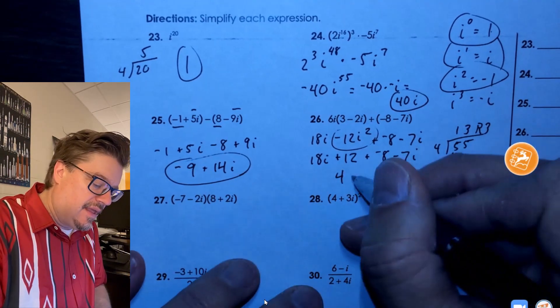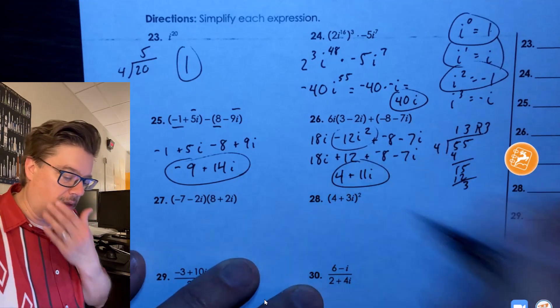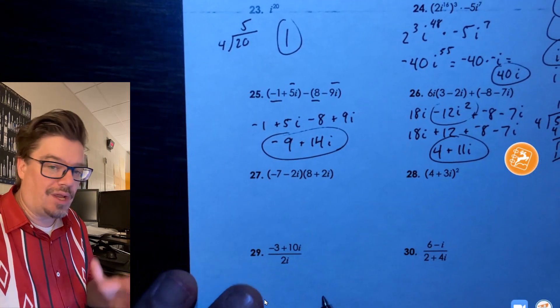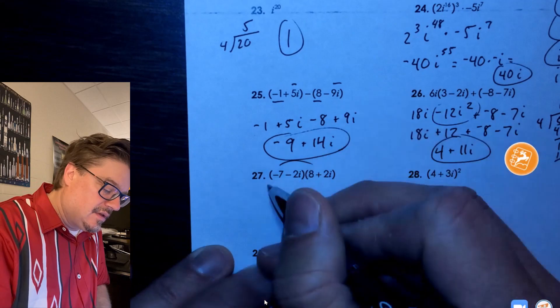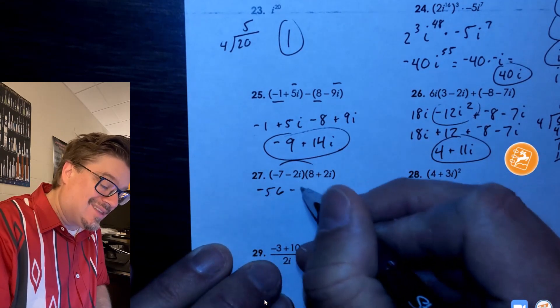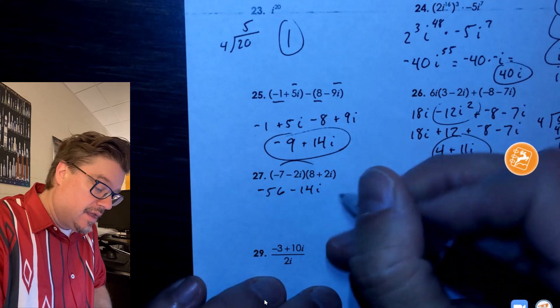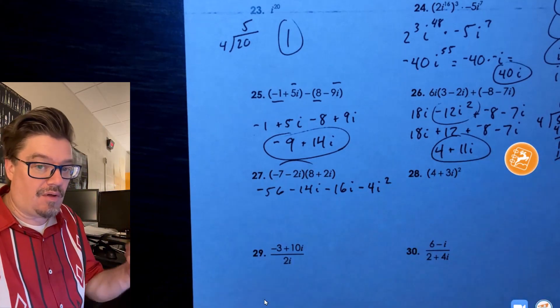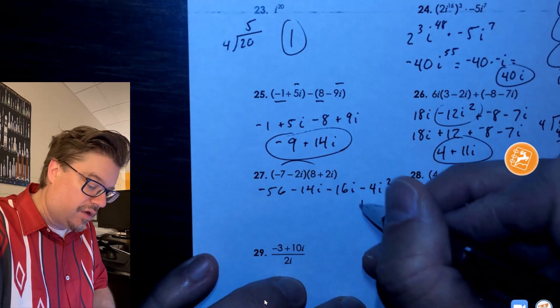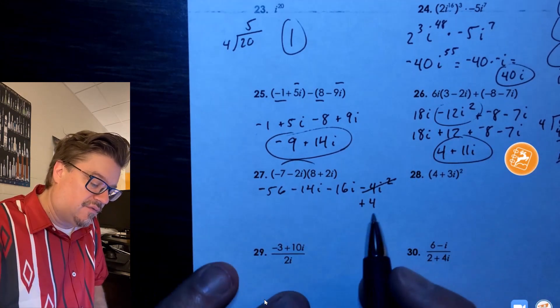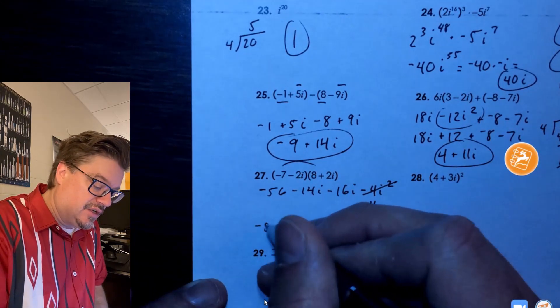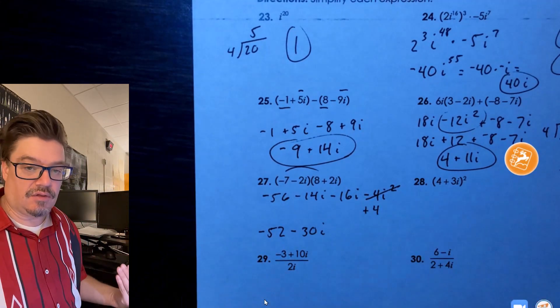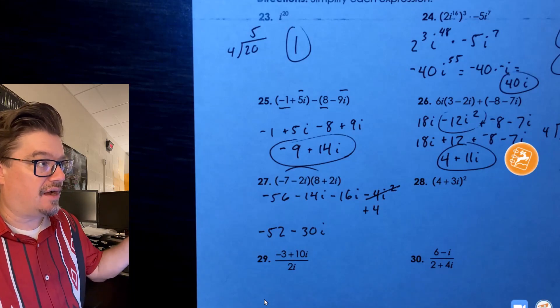This one, this is going to be some foiling. So negative 7, negative 56, negative 14i - the i just sticks along for the ride. Same thing here, you got negative 16i, then we're going to get a minus 4i squared. And remember, i squared is a sign change, so that's really plus 4. So then plus 4 plus this guy is a negative 52, and then this is a minus 30i. And there's nothing you could do - remember, adding, subtracting, i, the powers of i are not going to change. You're just going to add or subtract their coefficients.